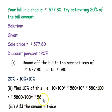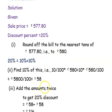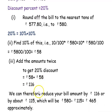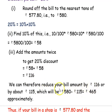On simplifying you get rupees 58 for 10 percent. Since the discount is 20 percent, you add that amount twice: rupees 58 plus rupees 58 gives rupees 116.